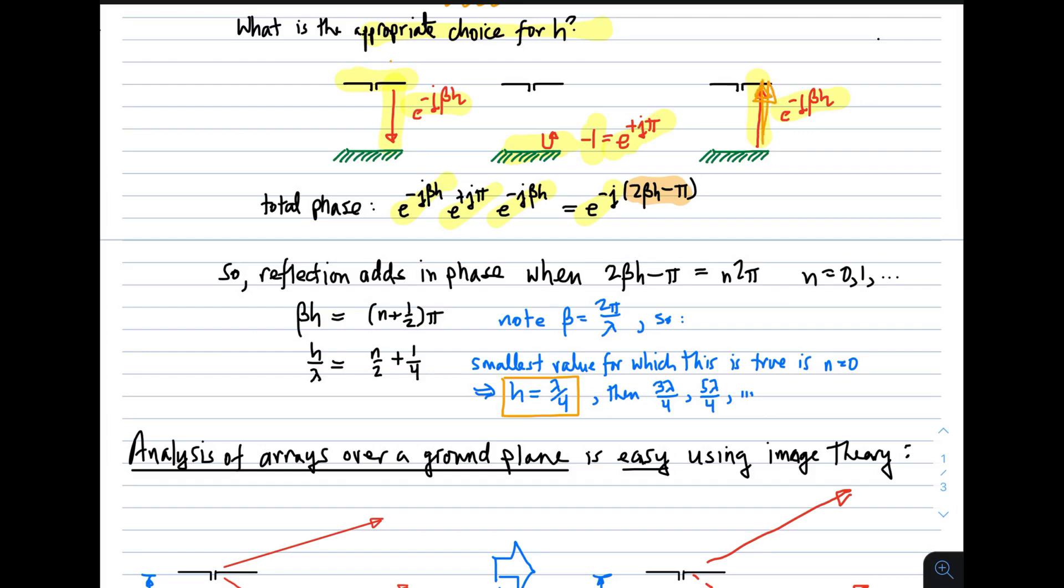So in other words, this wave that's coming back from the ground plane would be in phase with the radiation directly from the dipole in outward. So we want 2 beta h minus pi to be equal to some multiple of 2 pi. But that multiple might be zero, might be one, and so on. All those values of n would result in this relationship giving us the desired in-phase contribution. So if we solve for beta h, we find that beta h should be n plus 1 half times pi. And since beta is a phase propagation constant, it's equal to 2 pi over lambda. So we find that h over lambda is n over 2 plus 1 quarter. Now the smallest value of n is zero, so the smallest value of h over lambda is 1 quarter.